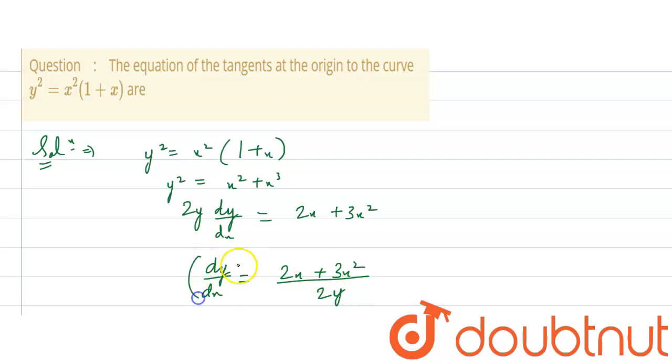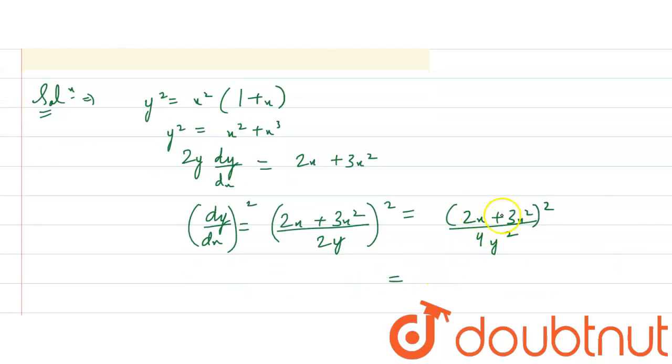Now, if we square this, so here is also square. Then we get 2x plus 3x square whole square upon 4y square. Now, y square is x square plus x cube.